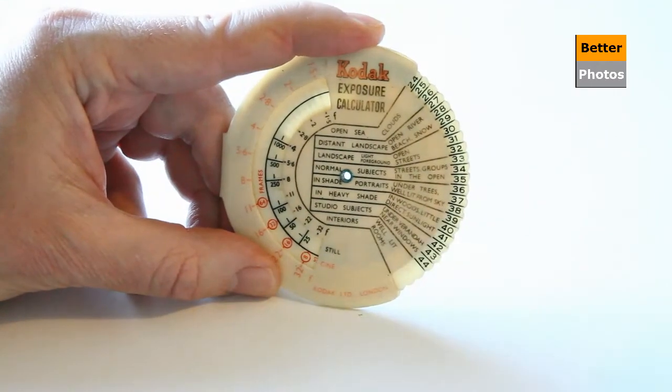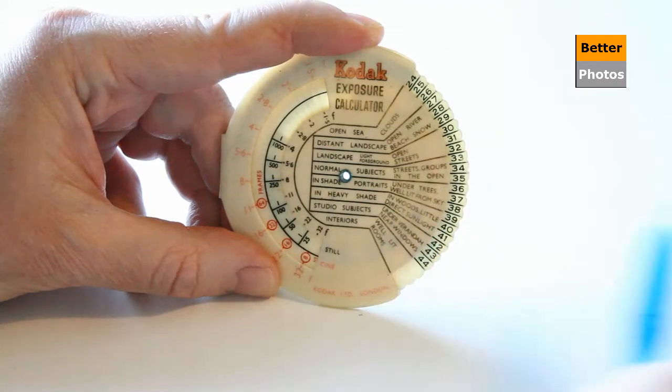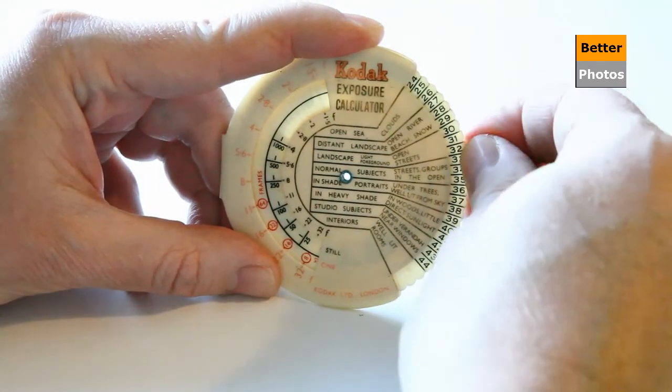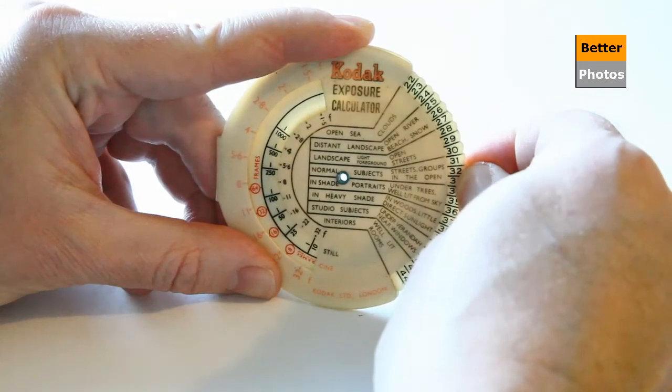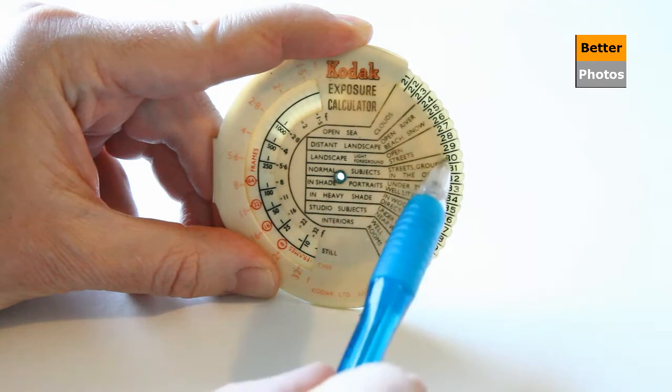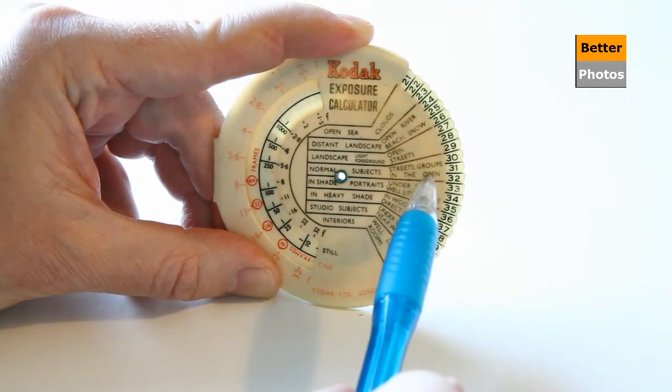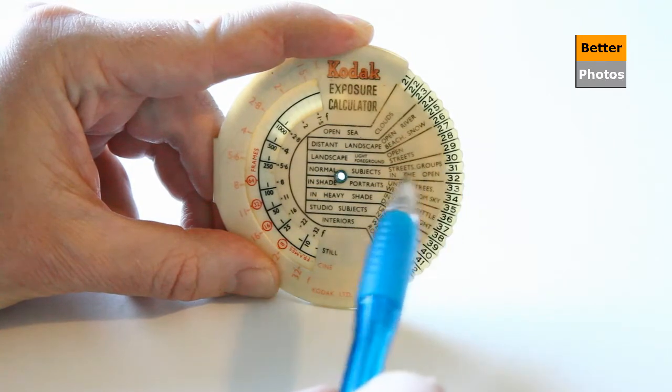So the next step is to then fine tune that exposure dependent on where we're actually taking pictures specifically. So let's say we're taking normal subjects, we need to use this category but we need to now move in, remember we brought that number 30 from the other side, dial 30 in so that it lines up into this section here. We're imagining we're taking pictures normal subjects, say groups in the open or whatever, 30 we've lined up with that.